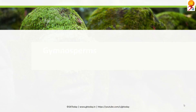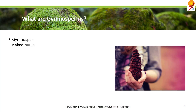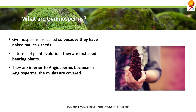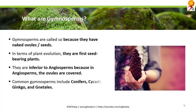Coming to gymnosperms. What are gymnosperms? Gymnosperms are called so because they have naked ovules or seeds — their seeds don't have any covering. In terms of plant evolution, they are the first seed-bearing plants and come right after ferns. They are inferior to angiosperms because in angiosperms the ovules are covered and seeds are protected, whereas in gymnosperms seeds are not protected. Common gymnosperms include conifers, cycads, Ginkgo, and gnetales.